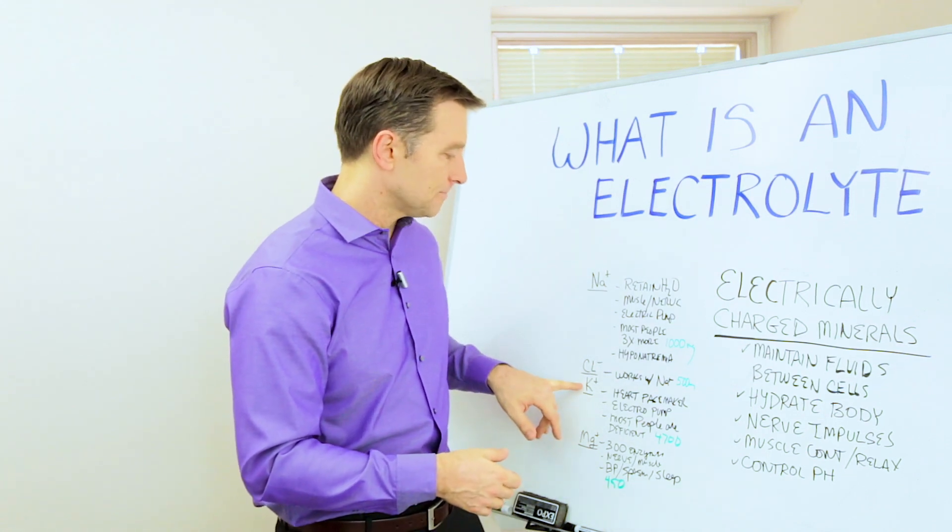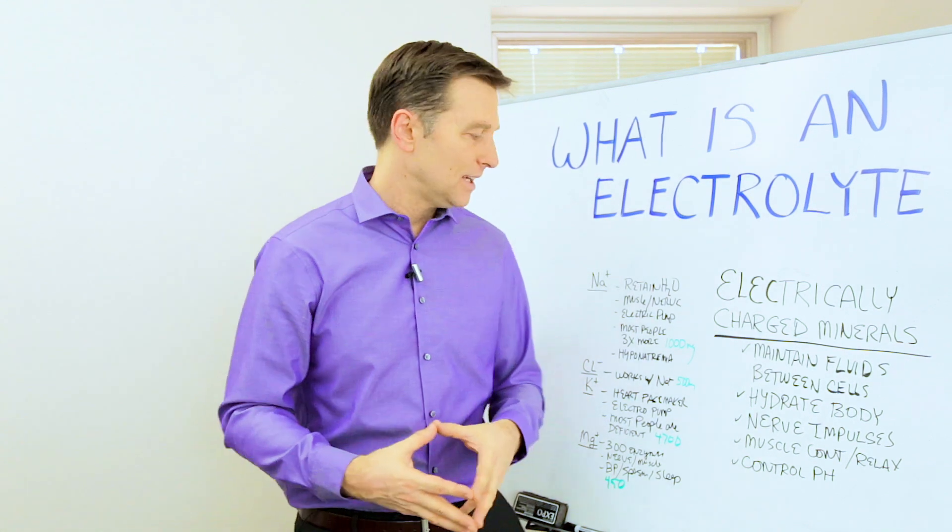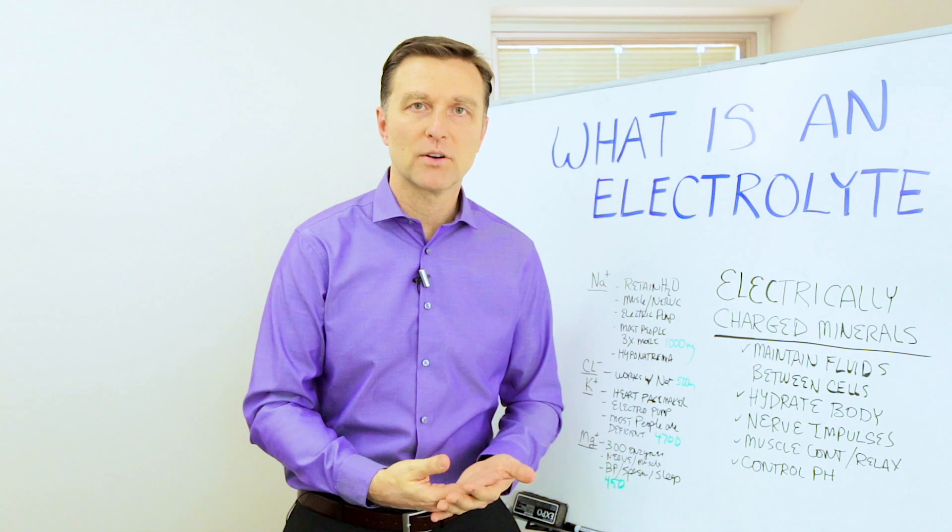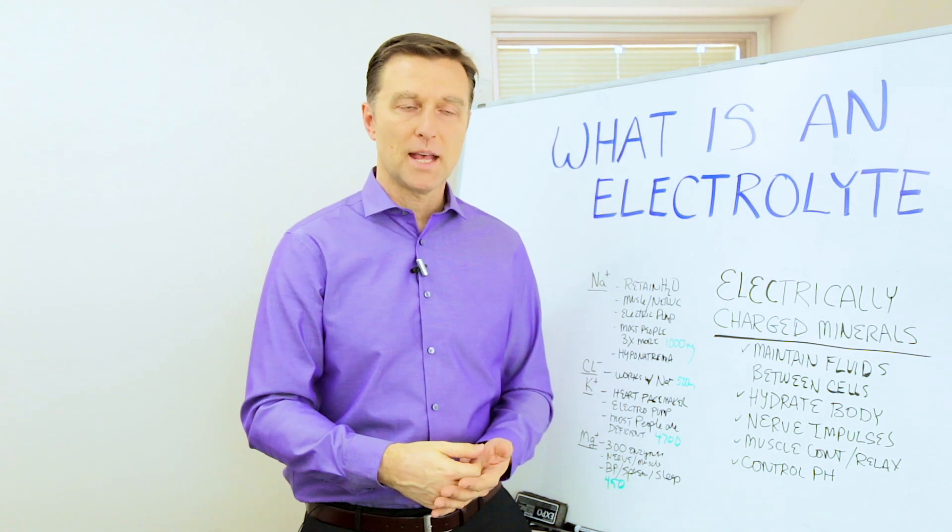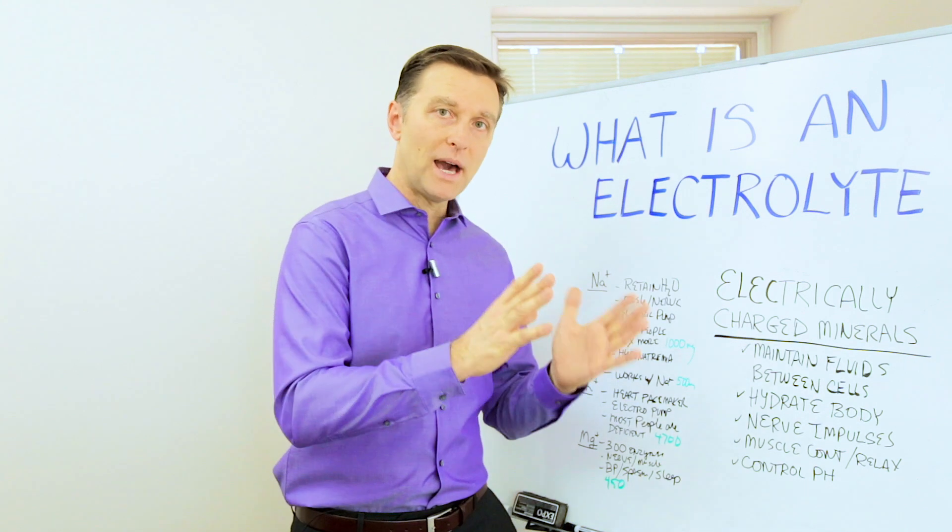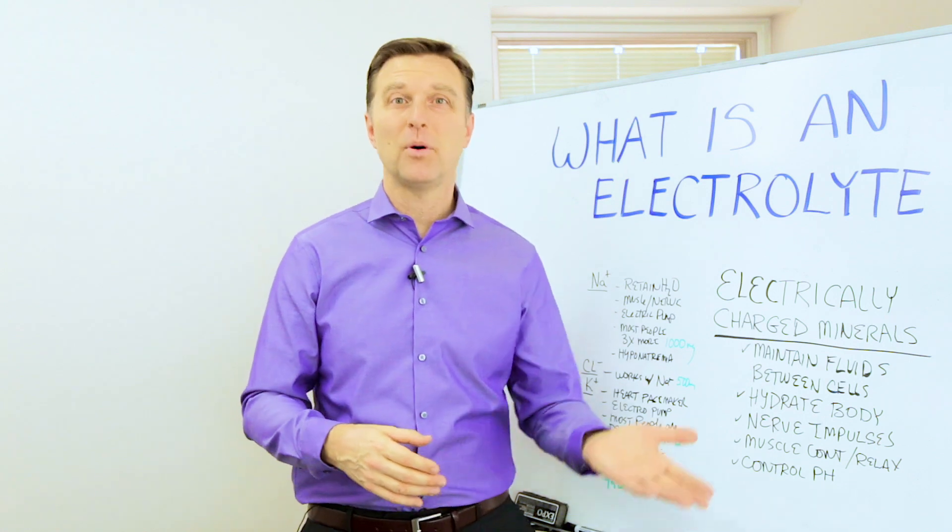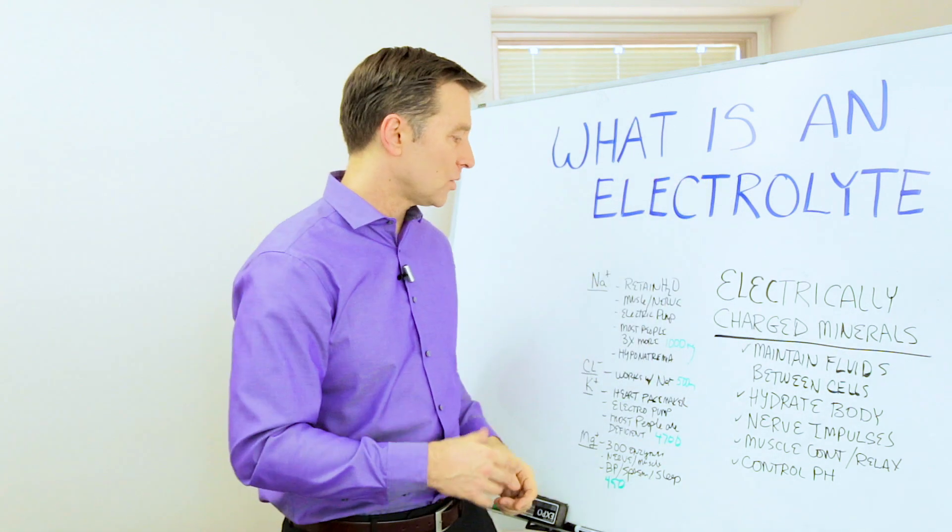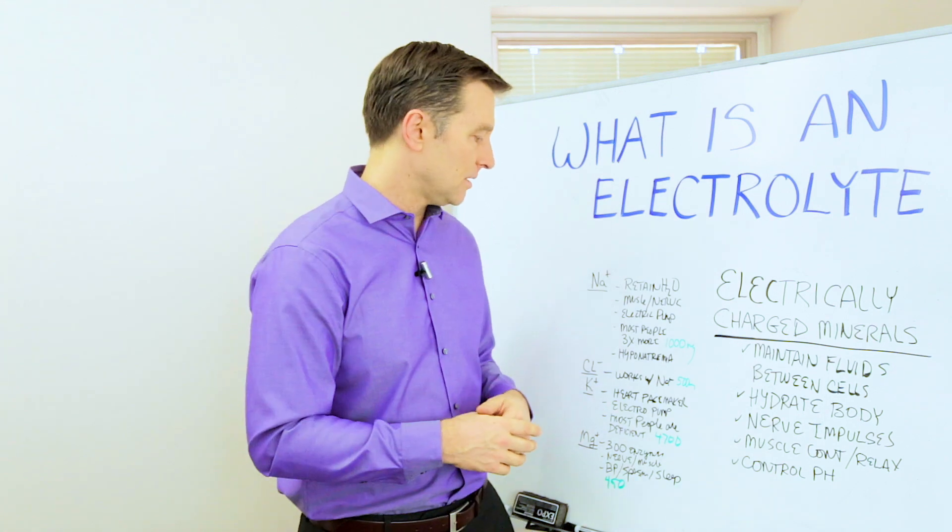So then we have potassium. It's K+. Now potassium is involved in the pacemaker of the heart, involved in the rhythm of the heart. So when you don't have enough potassium, your rhythm goes out of balance. You get things like atrial fibrillation. You also get a higher pulse rate. And sugar will deplete it as well.